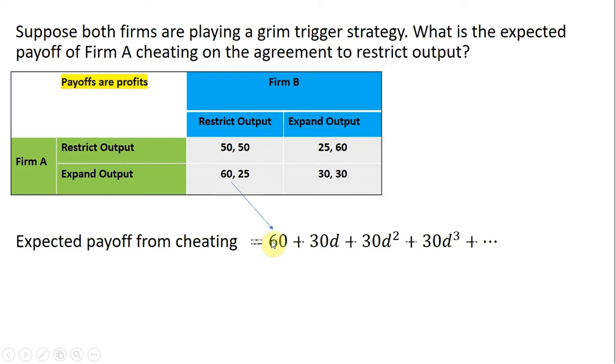However, after that, the other firm will never cooperate, and that's firm B, will never cooperate. So firm B will be expanding output every period in the future, and as a result, the best thing for firm A to do would be to expand output. So that's where these 30s are coming from in the future. Both firms will be expanding output.